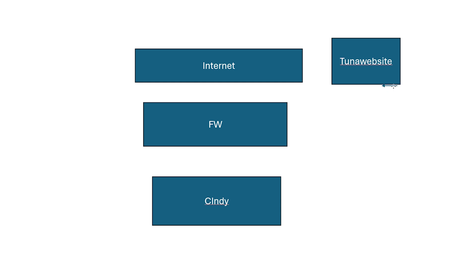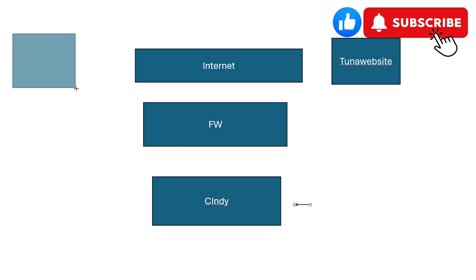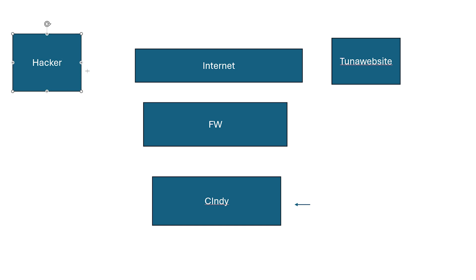The TUNA website sends a SYN back to Cindy to open up a connection for data exchange. The message hits the firewall, and the firewall says the TUNA website is going back to Cindy — Cindy initiated the connection, so allow her traffic back from the TUNA website. The firewall kept track of Cindy's traffic, so it knew she was going to the TUNA website and enabled the return traffic. If a hacker on the internet tried to connect to Cindy, the firewall's base policy would deny all incoming connections — so the hacker can't get to Cindy. This is what we mean by the firewall keeping state.